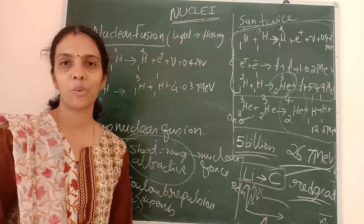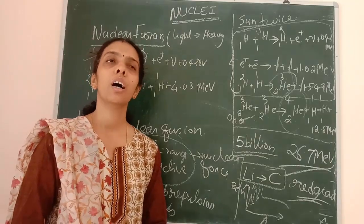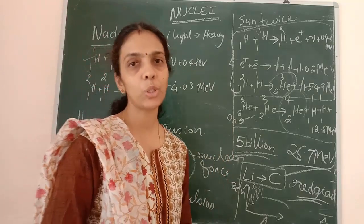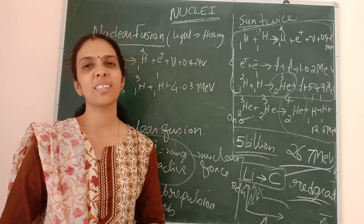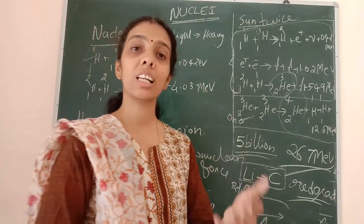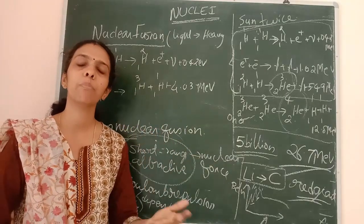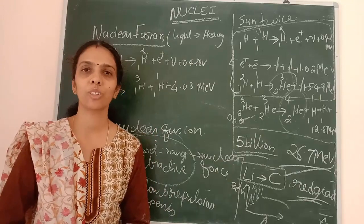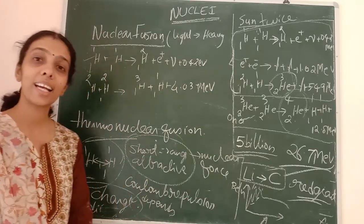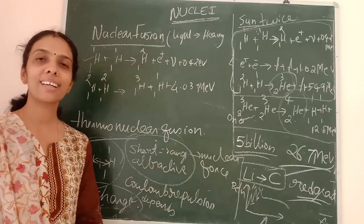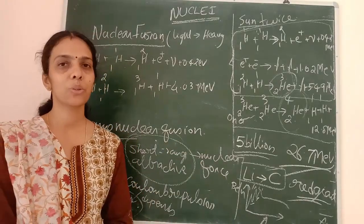For nuclear fusion to be done in a controlled manner, it requires a very high amount of heat energy — around 10⁵ kilo-kelvins. The big challenge for scientists is: what material can withstand such extreme temperatures? Research is ongoing, and we hope to eventually obtain and use this high amount of energy in a useful manner.